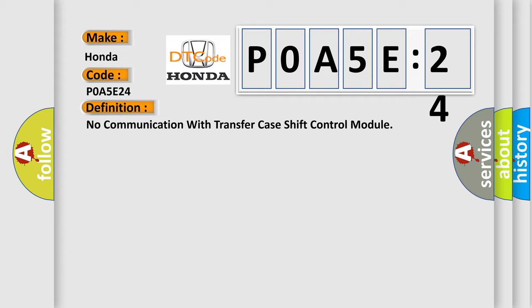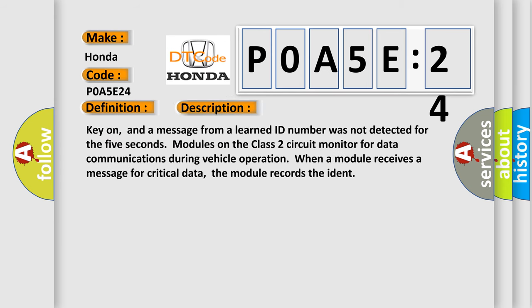And now this is a short description of this DTC code. Key on, and a message from a learned ID number was not detected for five seconds. Modules on the class two circuit monitor for data communications during vehicle operation. When a module receives a message for critical data, the module records the ID.